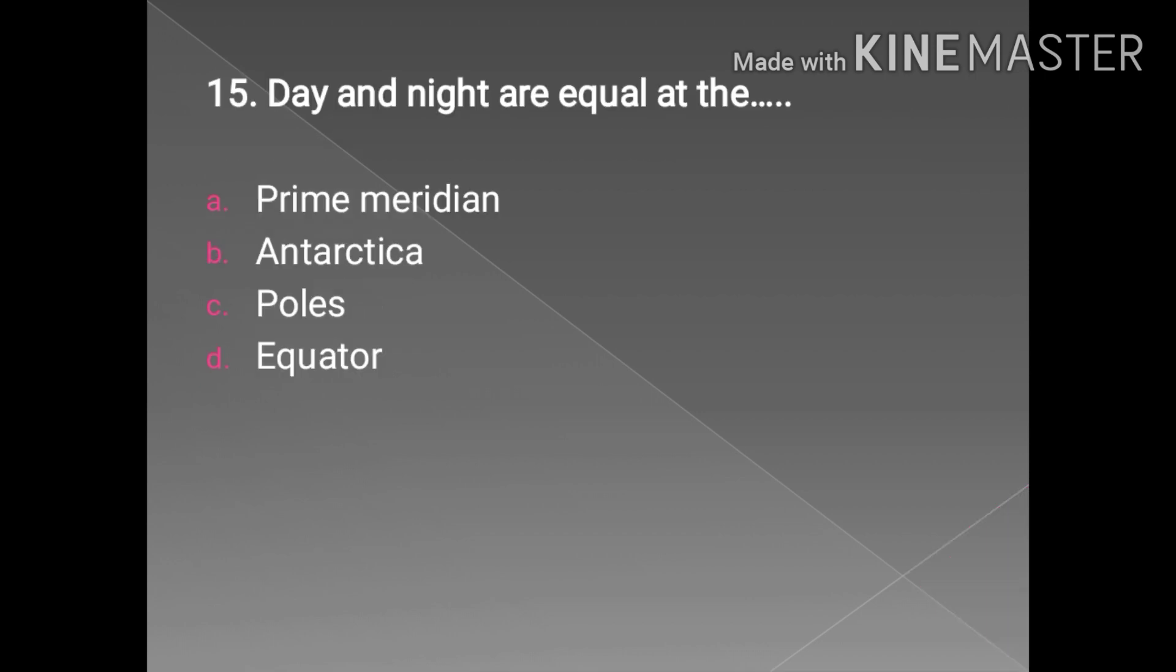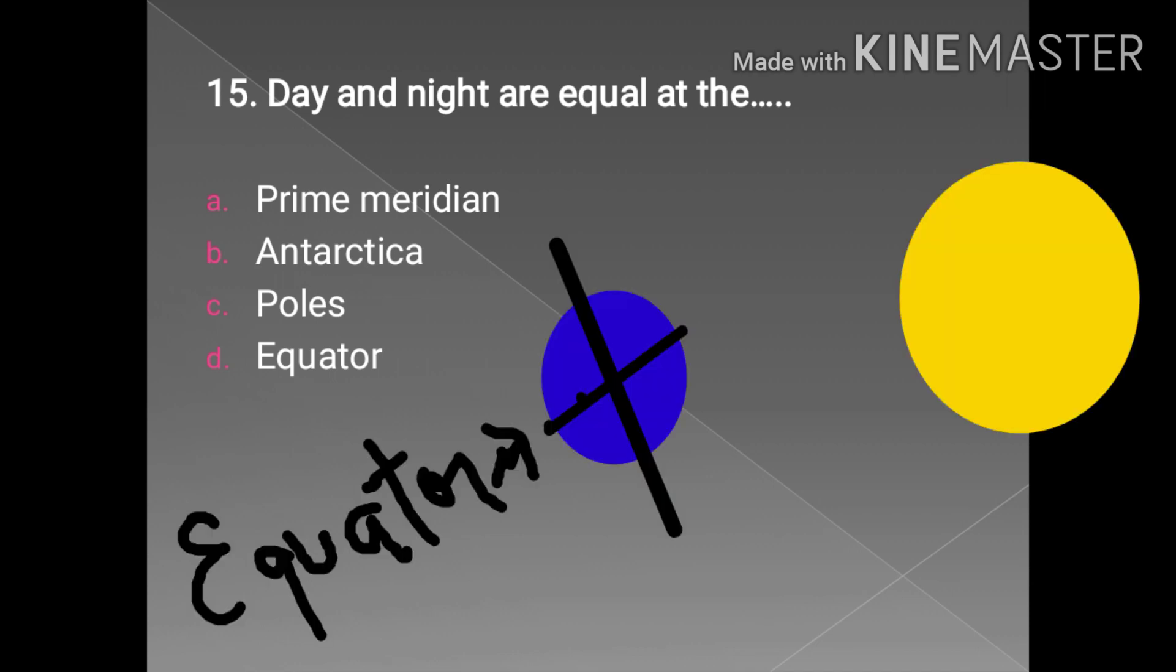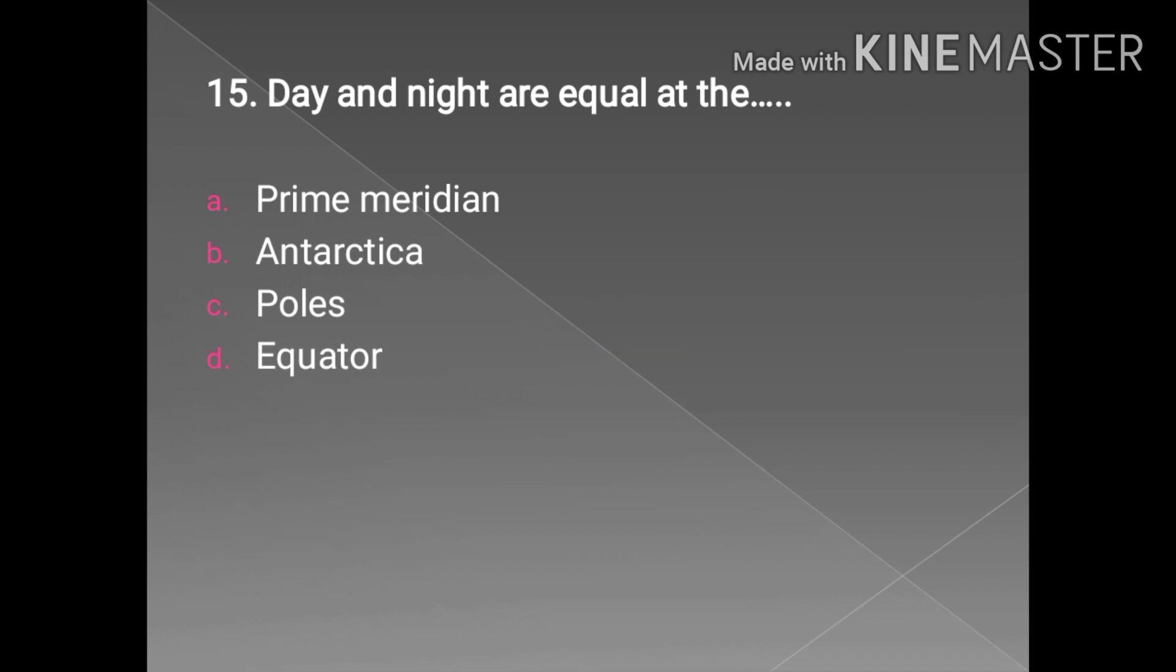Question number 15: day and night are equal at equator. Why is it so? Because it does not tilt in relation to Sun's location. Because of the tilted axis of Earth, the poles and locations away from the equator lean towards or away from the Sun as orbit is completed. Next slide we have question number 16.